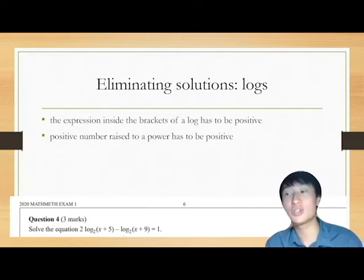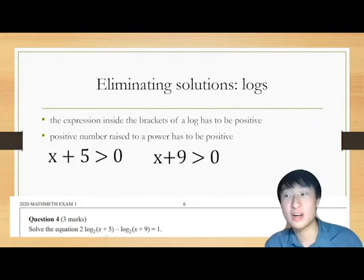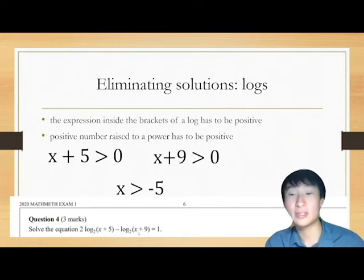When we solve this question here, x plus 5 must be positive, x plus 9 must be positive. What does that tell you about x? That means that x can't be negative 5 or less.